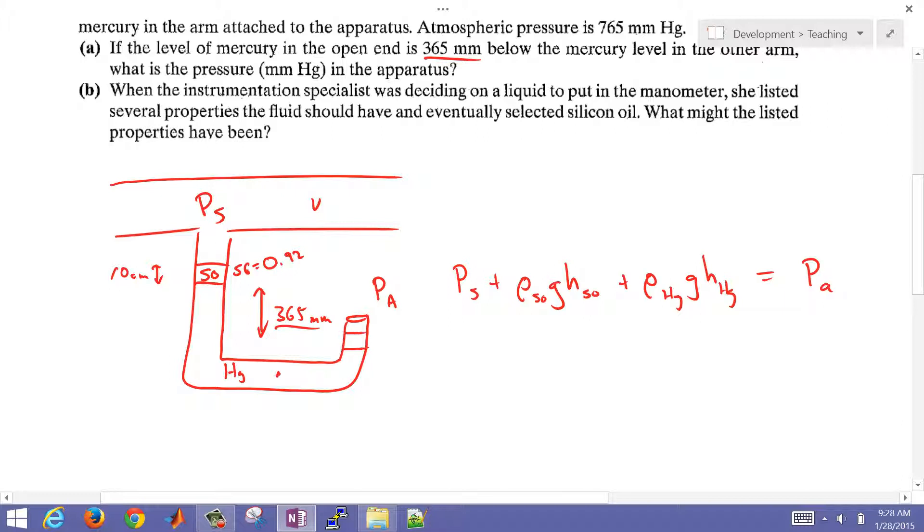Now let's say I did have another liquid here. Then I would just add rho liquid g times h of that liquid. But I don't have another liquid there. But if I did, I would just add that term to this other side.